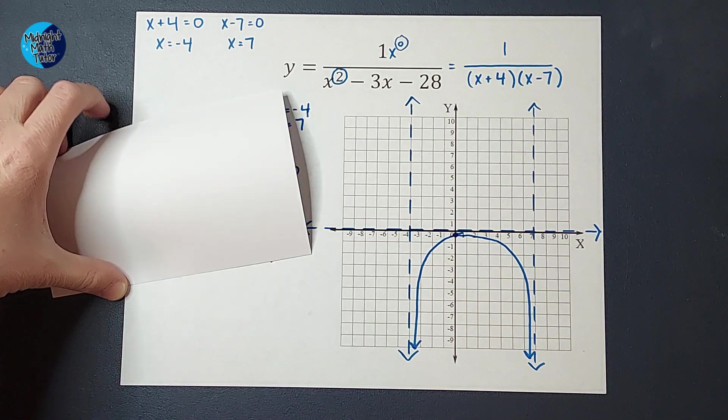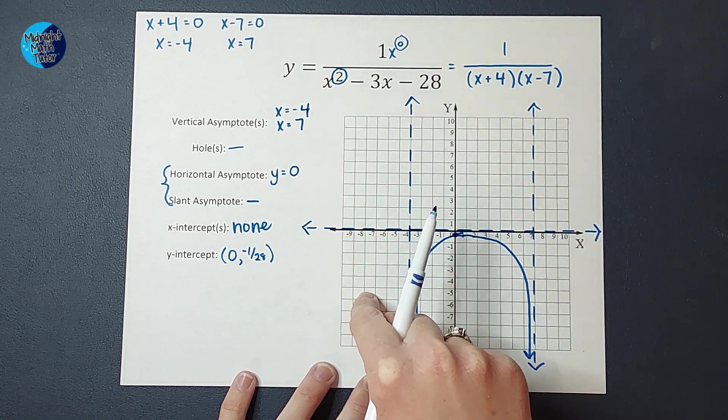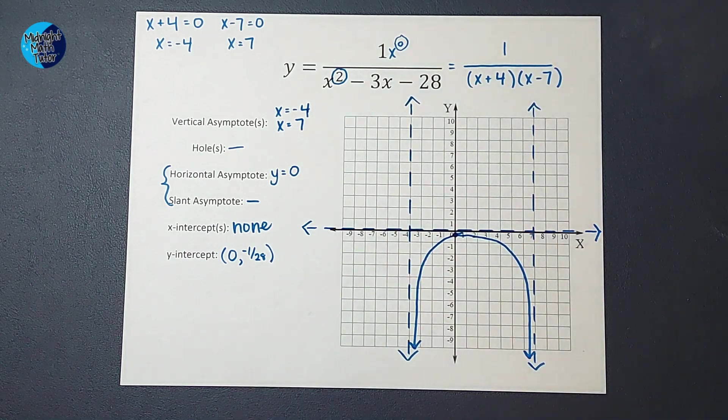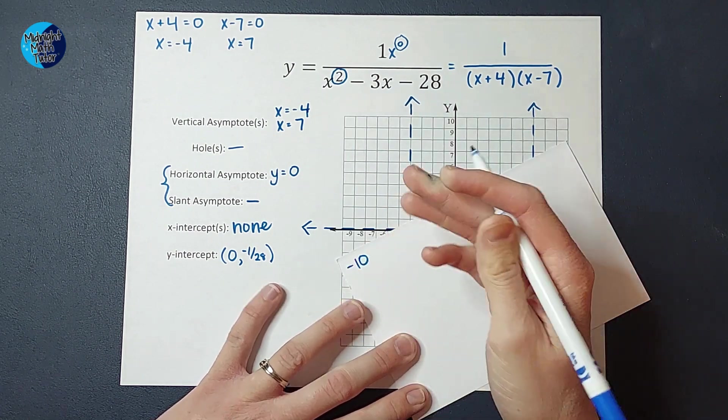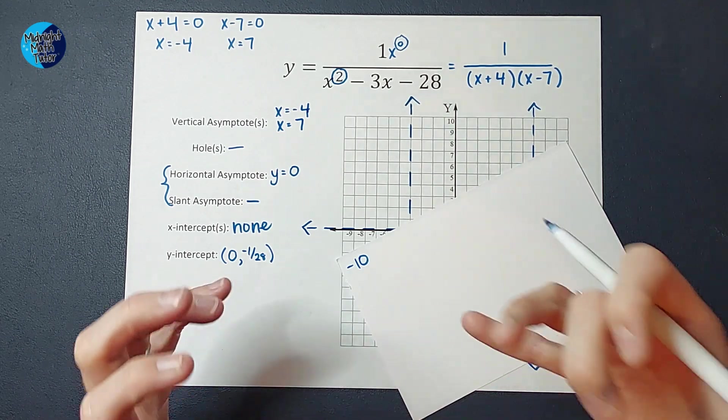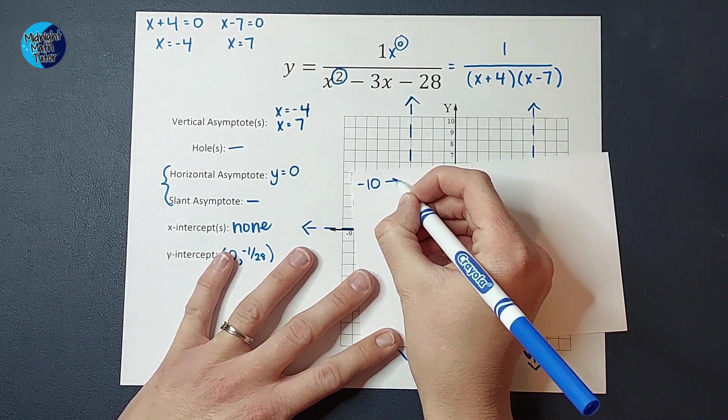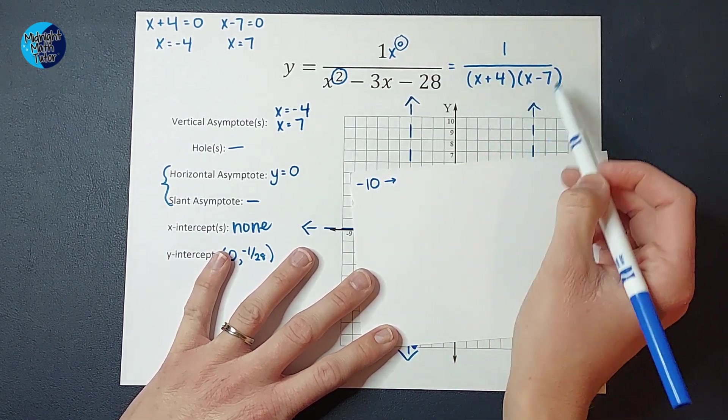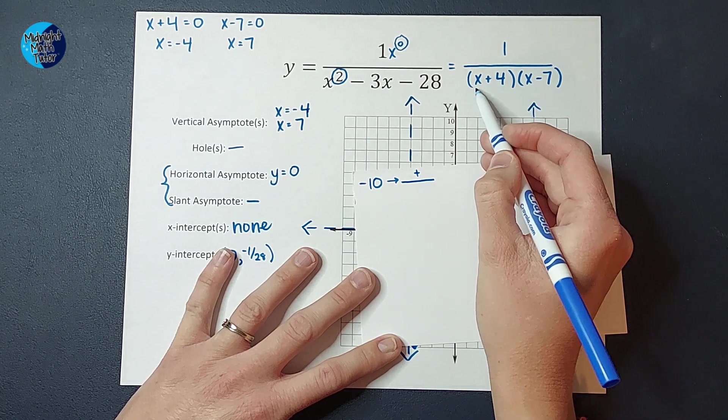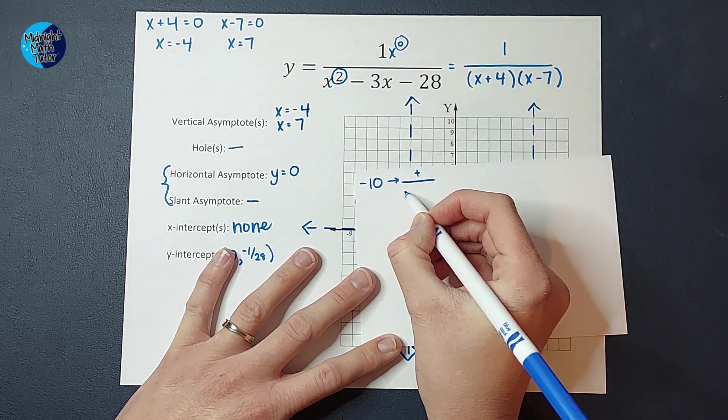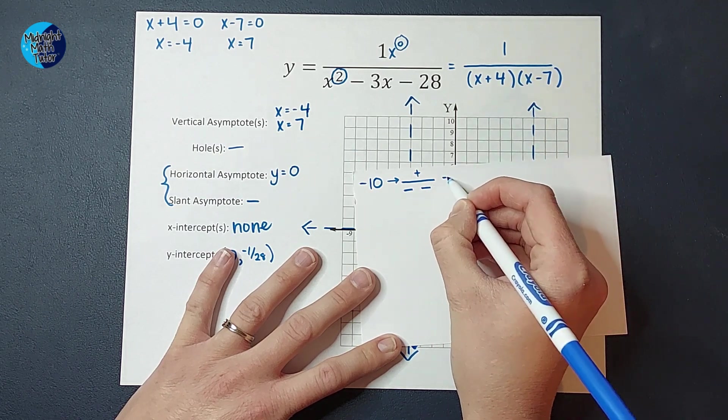All right. So, to figure that out, I really just need to know when I plug in one of these numbers, will my answer be positive or negative? That's all I need to know. So, let's go ahead and plug in a negative 10. But I am not concerned about what my actual numerical answer is. I just want to know if my answer is going to be positive or negative. So, let's see how that works. If I plug in a negative 10 to this. My top is just a 1. It's positive. Right? And on bottom, I would have negative 10 plus 4, which would give me a negative. And negative 10 minus 7, which would also give me a negative.